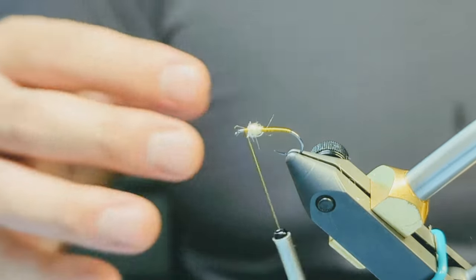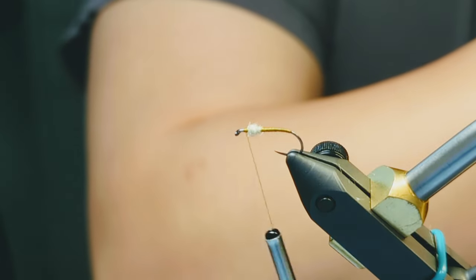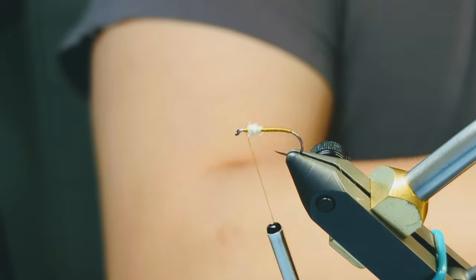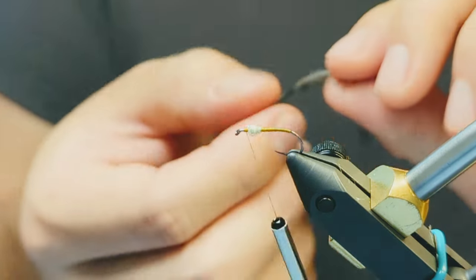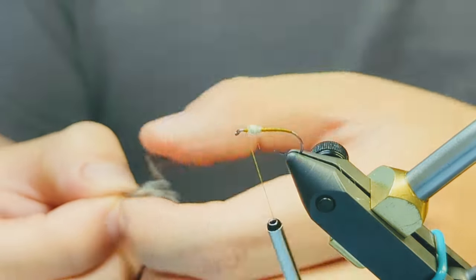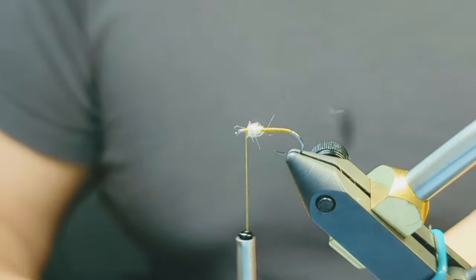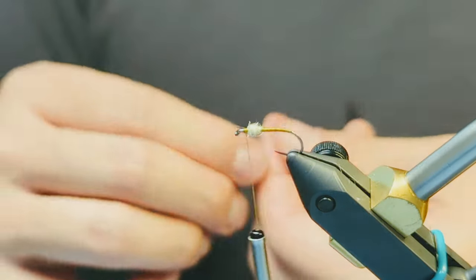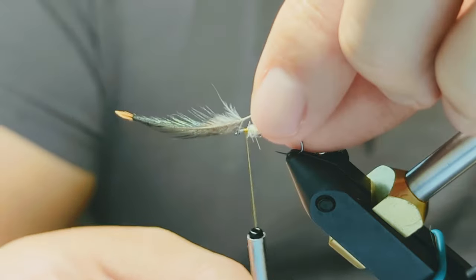Finally, end with your thread in front of the dubbing. Prepare a starling feather by stripping off the fuzzy bits at the base of the feather. I usually grab a feather from the chest or the neck of the bird because these fibers tend to be nice and plush.